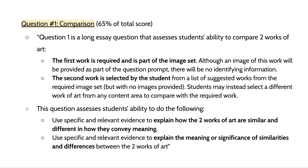Our first question type is the comparison question. To give you an overview, it'll be about 65% of your total score on the 2020 exam. It'll give you an image that is part of the 250 AP artworks, and it will also give you a couple of options for a second work to choose. Then you'll be comparing that first work with one of those three or four works in a list — basically asking how the artworks are similar and different and how they convey meaning.